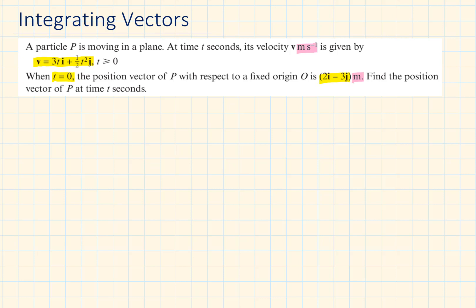We are given the velocity, which is represented by metres per second. The position vector of P with respect to a fixed origin O is talking about the vector OP. Since the units are given in metres, we are going to have to find out the displacement. Notice that going from metres per second to metres, we are adding one to the power — so this is a clue that we have to integrate.